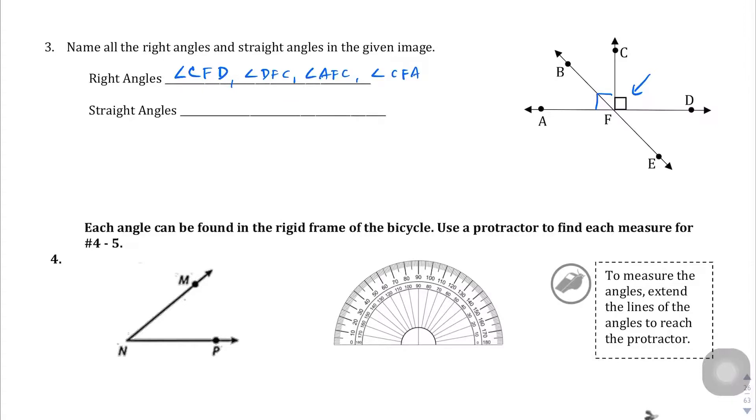Straight angles. There's two straight angles here. There's angle C, F, A, Angle A, F, D, which you can also call D, F, A. But the other one is gonna be D, F, E or B, F, E. Angle B, F, E.